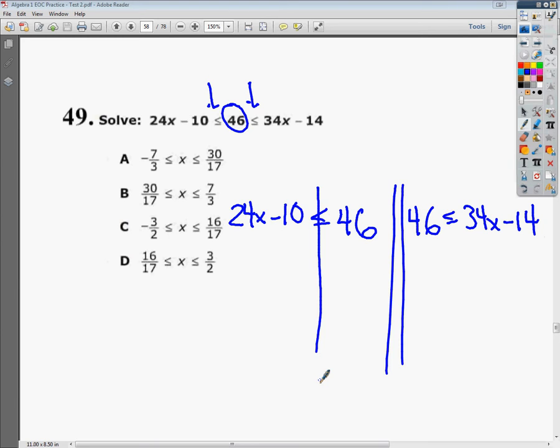So, draw your line. I'm going to move the thing that's furthest from the x, but on the same side of this line. So I'm going to move this minus 10. When we do that, we do the opposite, which is plus 10.